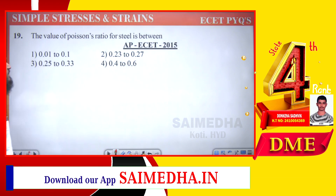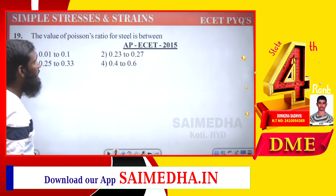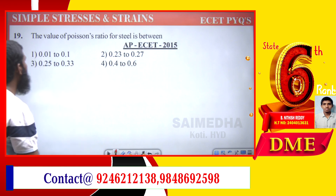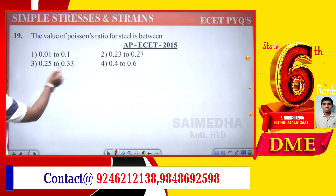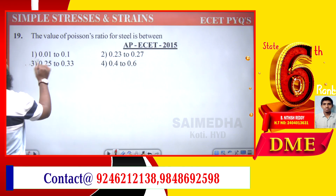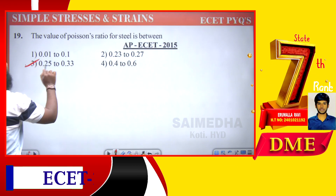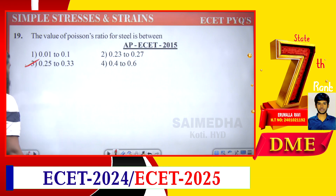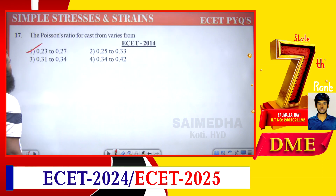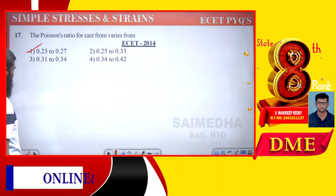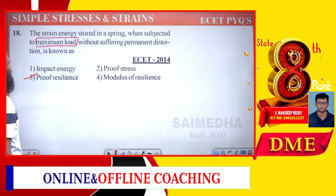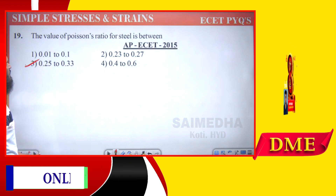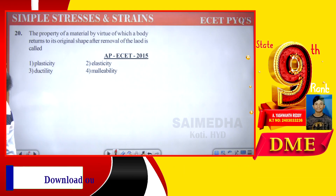The value of Poisson's ratio for steel — we have written the value as 0.25 to 0.33. For cast iron we have written 0.23 to 0.27, and for steel we are writing 0.25 to 0.33. This part we have taken.